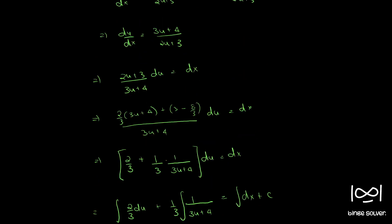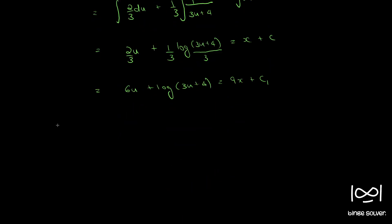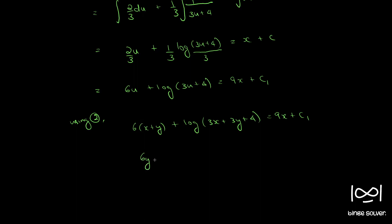Now recalling substitution equation 2, x plus y equal to u, we plug x plus y in place of u. We have 6 times x plus y plus log of 3x plus 3y plus 4 equal to 9x plus c1. Bringing 9x to the left side, we get 6y minus 3x plus log of 3x plus 3y plus 4 equal to c1.